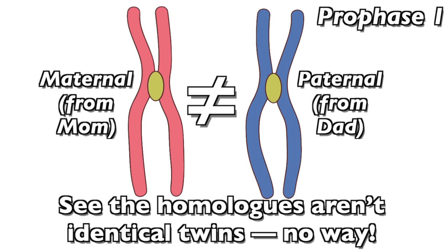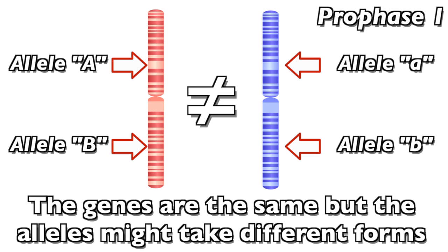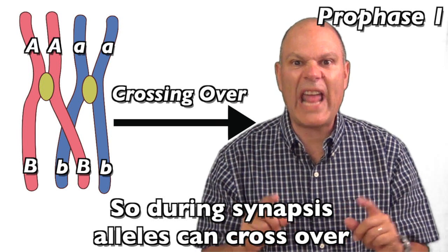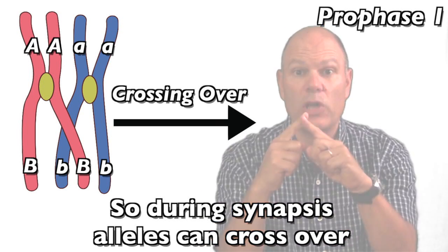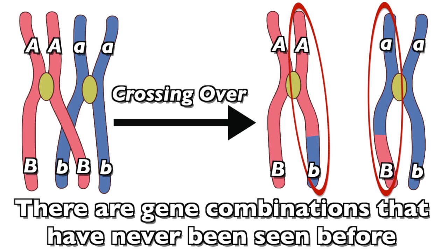See, the homologues aren't identical twins — no way, they're not the same DNA. The genes are the same, but the alleles might take different forms. So during synapsis, alleles can cross over between homologues, and when it's all over, there are gene combinations that have never been seen before.